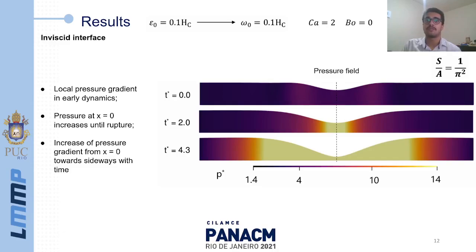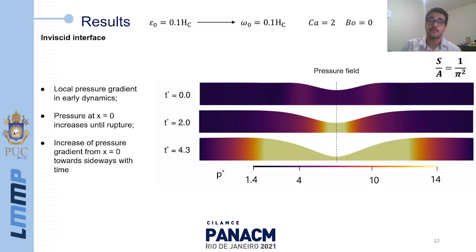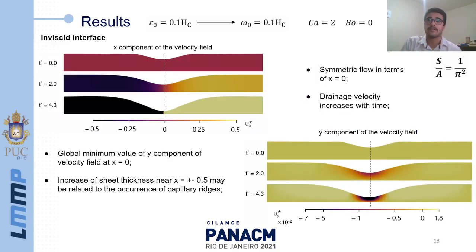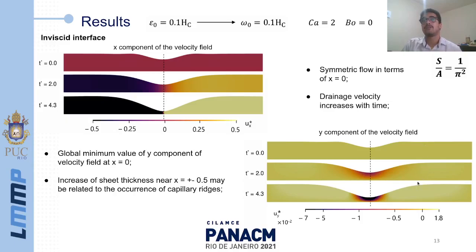With an initial perturbation amplitude of 10% of Hc and a capillary number of 2, we see the pressure field at three different times. The pressure is maximum at the region of minimal thickness located at x equals 0, and increases there until the film reaches rupture, resulting in an increasing pressure gradient from x equals 0 towards the extremities. This increase in the pressure gradient drives the drainage of liquid from the perturbed region. The x-component of the velocity field shows an increase in drainage velocity over time, while the y-component shows a minimum at x equals 0. The film thickness increases near x equals plus or minus 0.5, which may be related to the occurrence of capillary bridges.